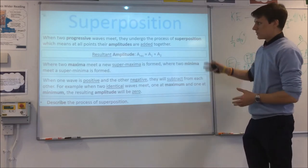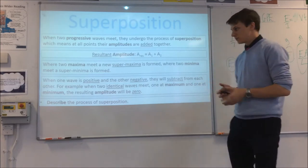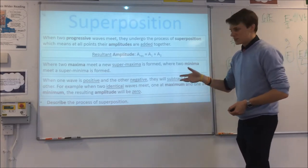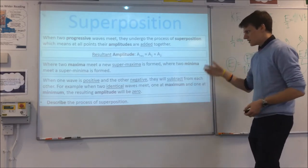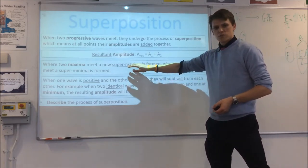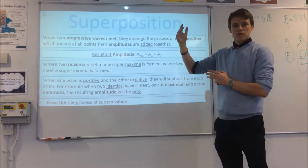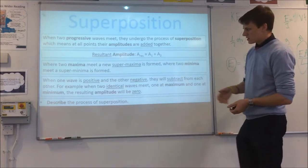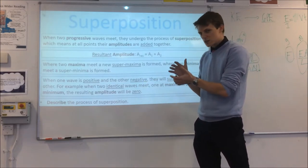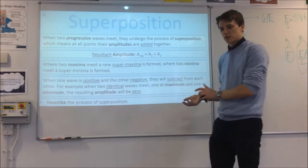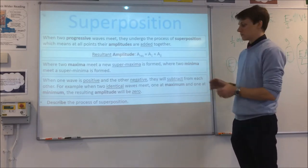This is where I left off last time, looking at the principle of superposition. I'm just going to quickly recap that because it's going to be important in this video. Superposition basically means when two waves meet, their amplitudes will add together. You get these two conditions: if two maxima meet each other, they'll make a bigger maximum; if two minima meet each other, they make a bigger minimum. And sometimes you can get the waves cancelling out — if one's at a maximum and one's at a minimum, they cancel each other out, which is called destructive superposition. The property where they add together is called constructive superposition.